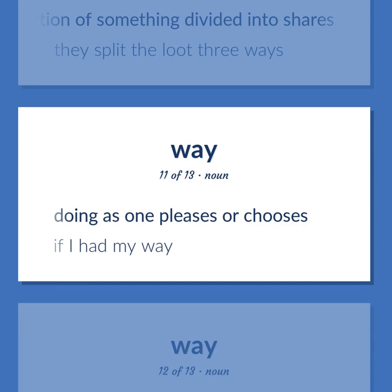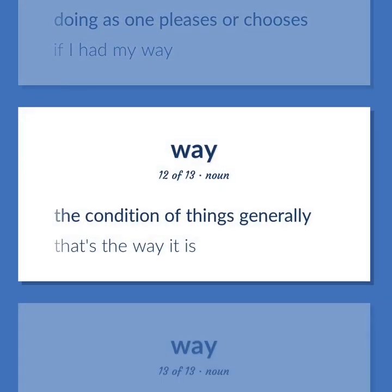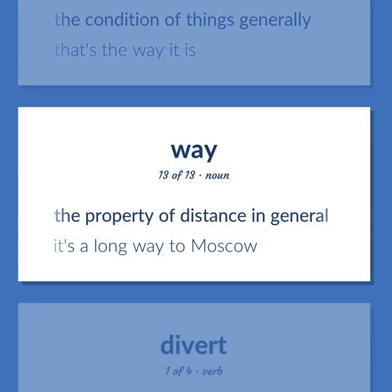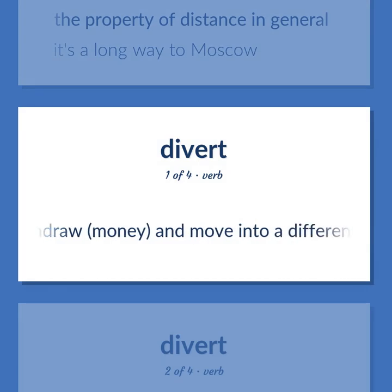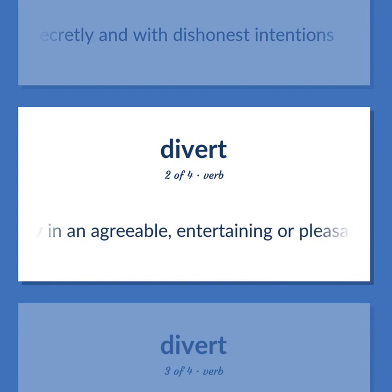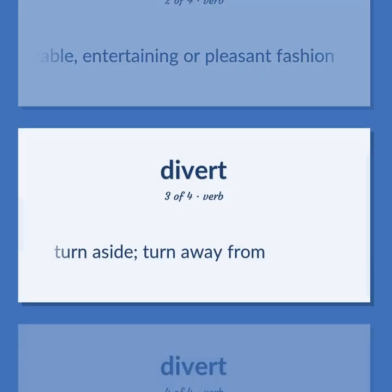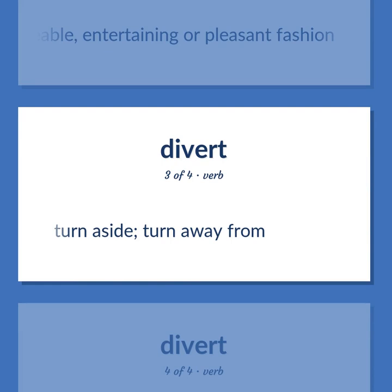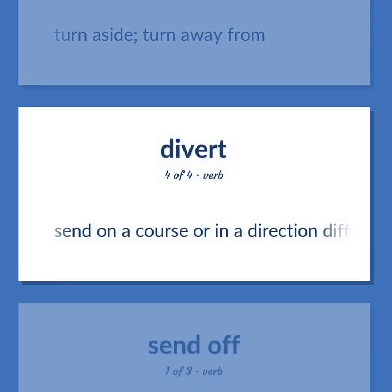Doing as one pleases or chooses. If I had my way. The condition of things generally. That's the way it is. The property of distance in general. It's a long way to Moscow. Withdraw money and move into a different location, often secretly and with dishonest intentions. Occupy in an agreeable, entertaining or pleasant fashion. Turn aside, turn away from. Send on a course or in a direction different from the planned or intended one.